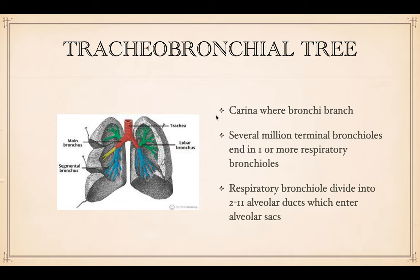The carina is where the bronchi branch, right here. The bronchi go into the terminal bronchioles, and those end in the respiratory bronchioles, which also divide into the alveolar ducts, which enter the alveolar sacs. So there's a lot of branching involved. All of this is to increase the surface area of the lungs.